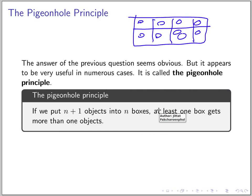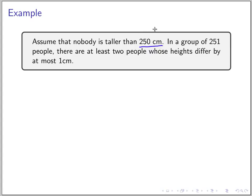So in this case, if you look at the height of the people, what should be the holes, the boxes, and what should be the objects? We have 251 people, so we can think of them as objects, and these will be the boxes.